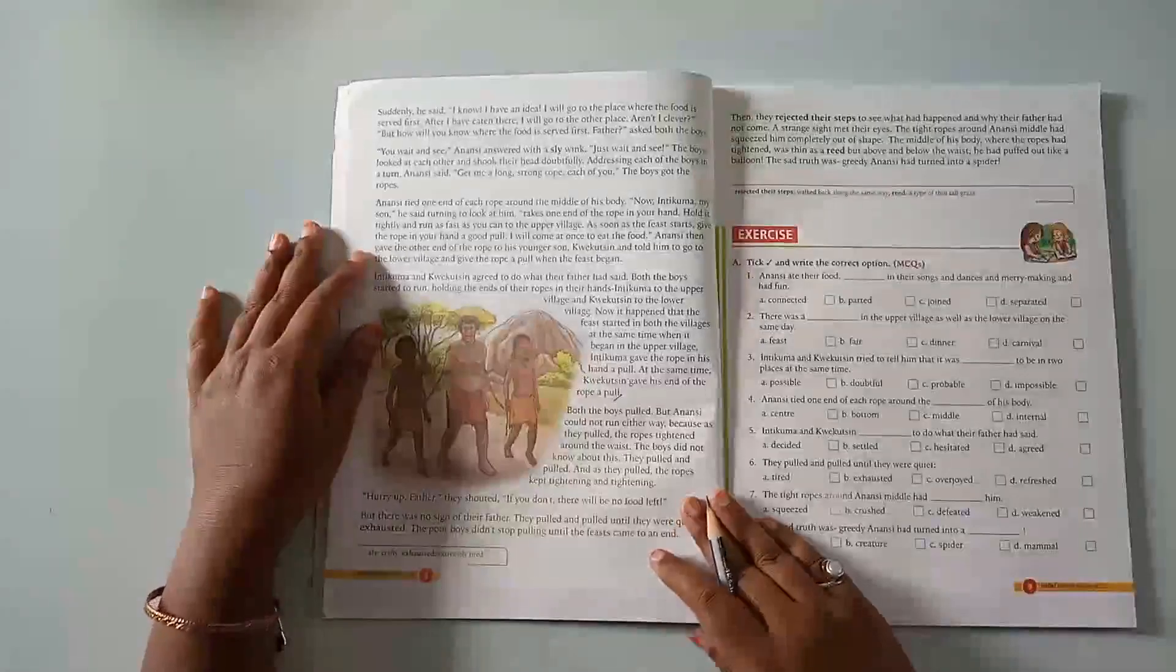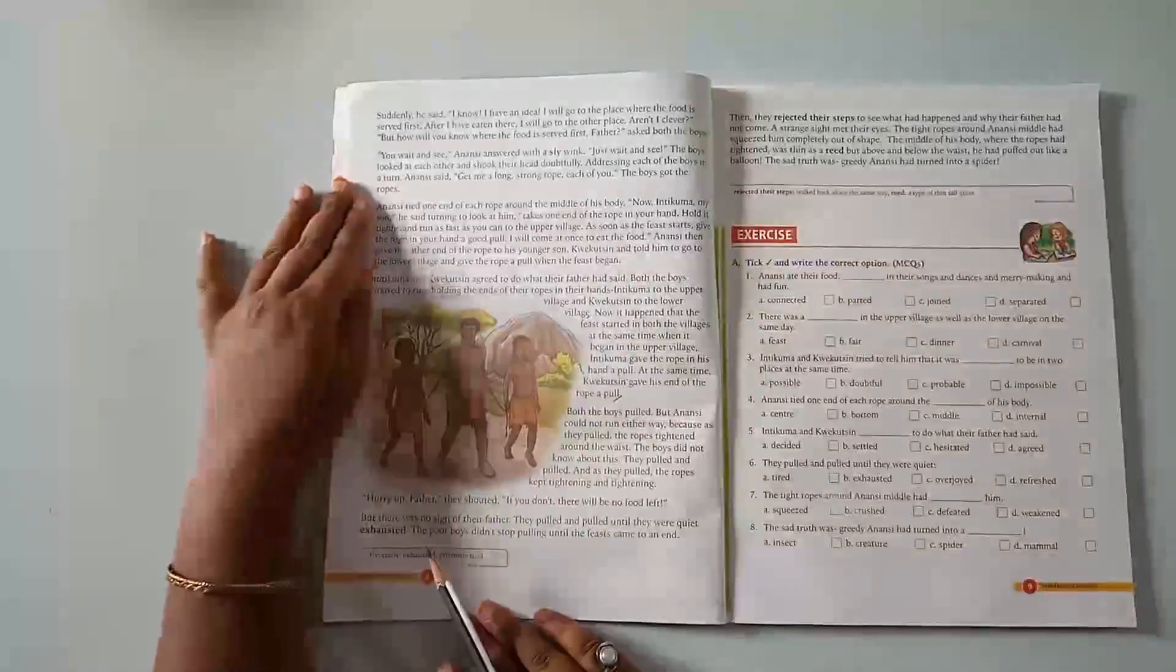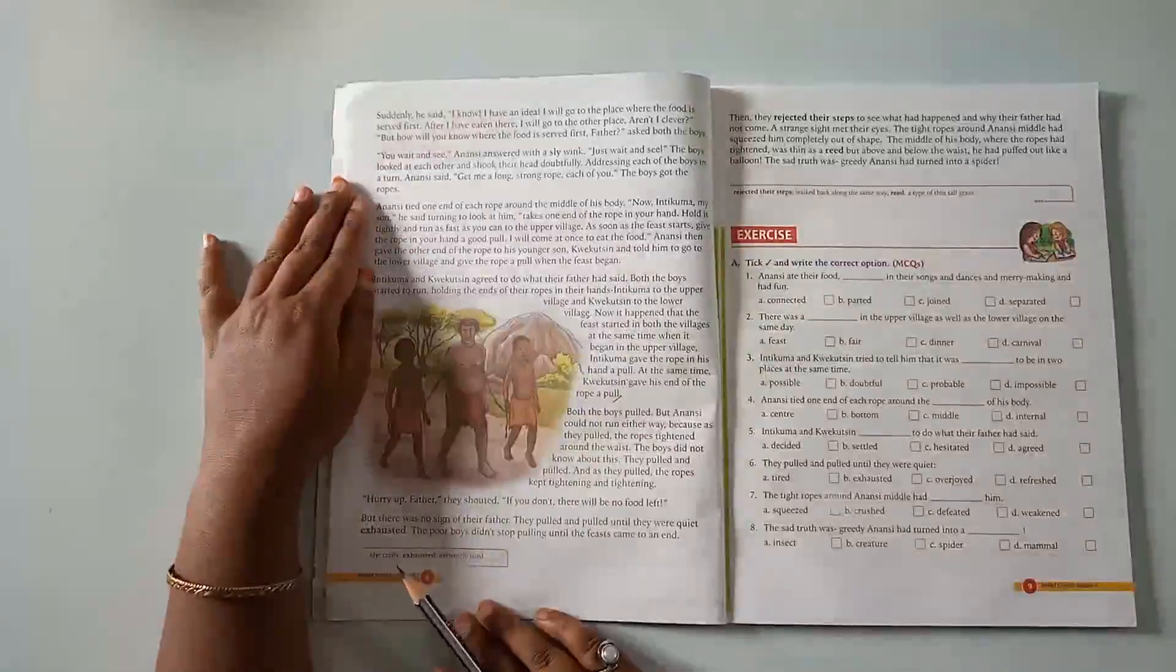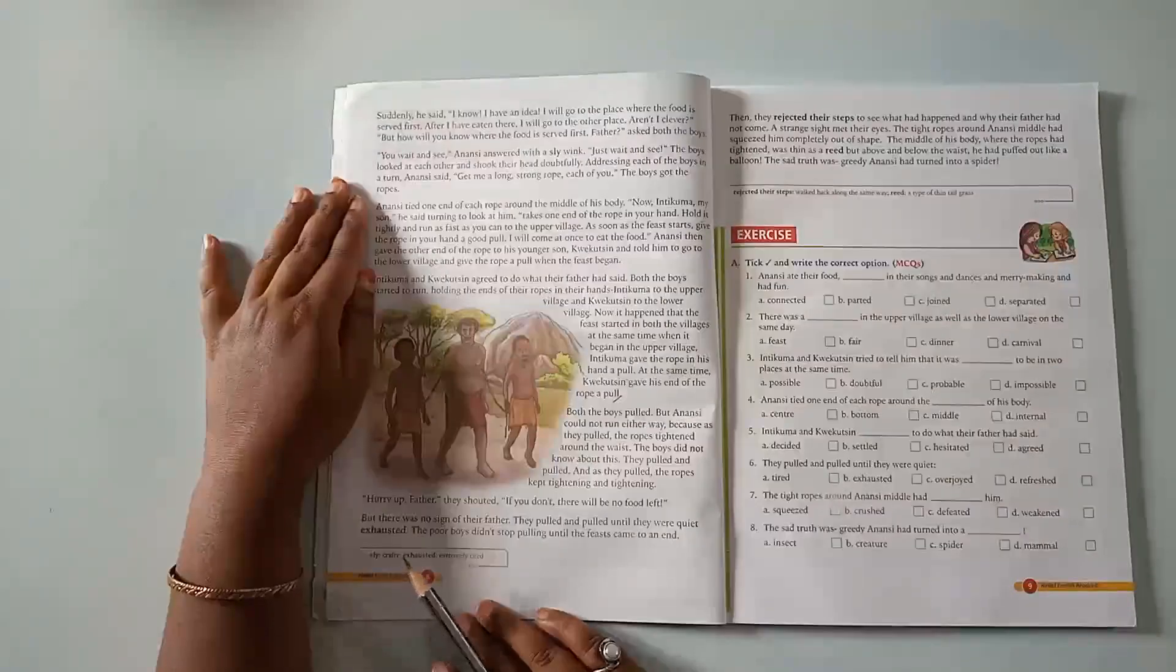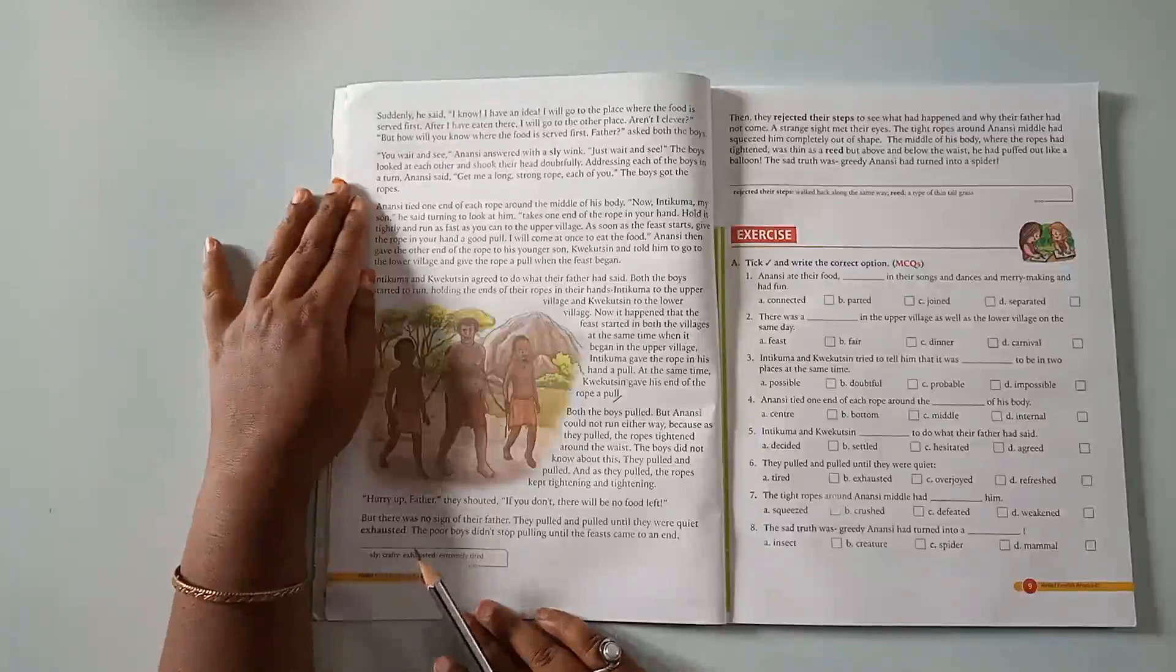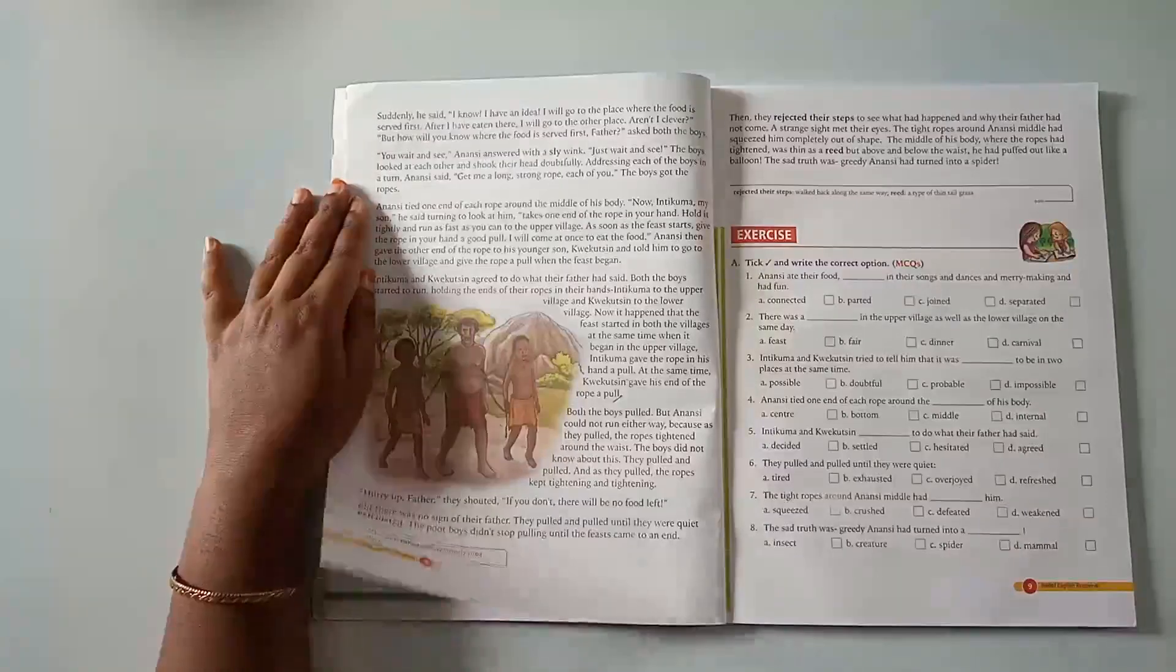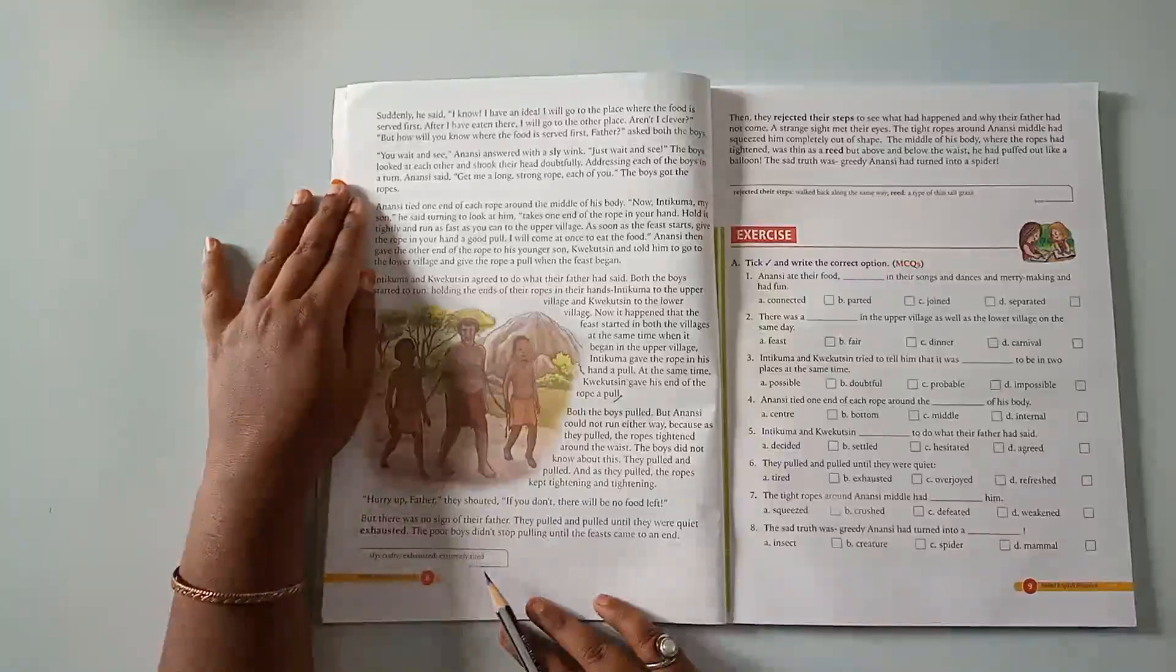Suddenly he said, I know, I have an idea. I will go to the place where the food is served first. After I have eaten there, I will go to the other place. Aren't I clever? But how will you know where the food is served first, father? asked both the boys. You wait and see, Anansi answered with a sly wink. Just wait and see, the boys looked at each other and shook their head doubtfully. Addressing each of the boys in turn, Anansi said, Get me a long strong rope, each of you. The boys brought the ropes.